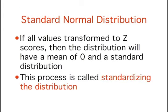If all the values in a distribution are transformed to z-scores, then the distribution will have a mean of 0 and a standard deviation of 1. This process of transforming the distribution to one with a mean of 0 and a standard deviation of 1 is called standardizing the distribution.